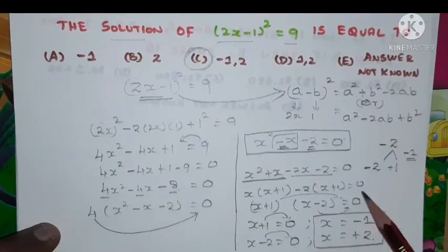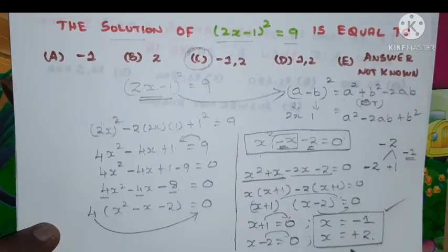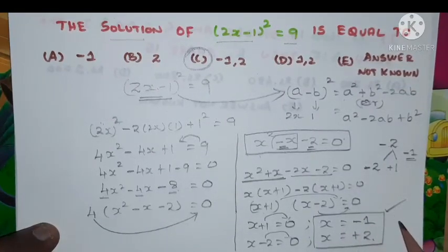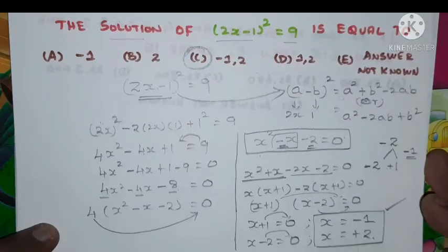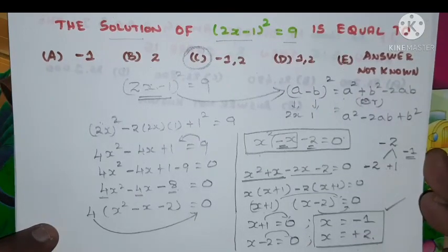Option C minus 1 comma 2 is the right answer. Hope you understand how we solved. Thank you for watching. This is your The First Step Academy learn and grow educational medium.